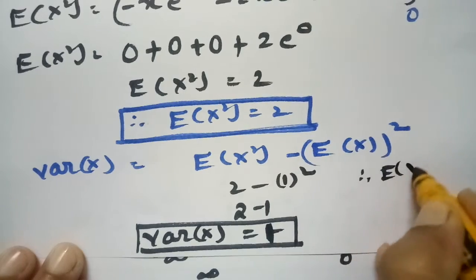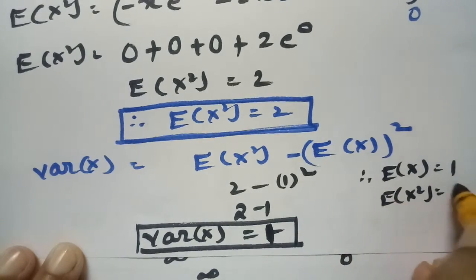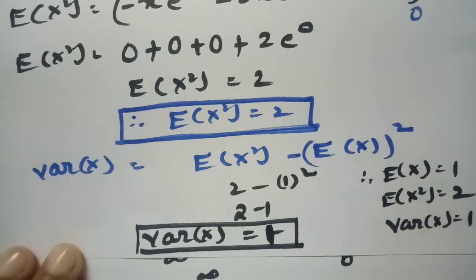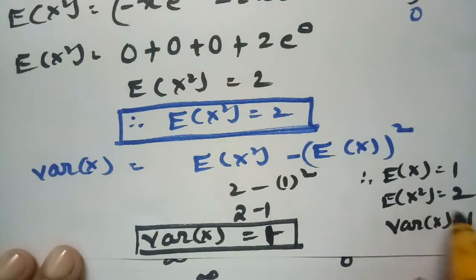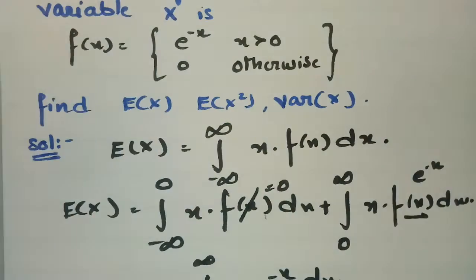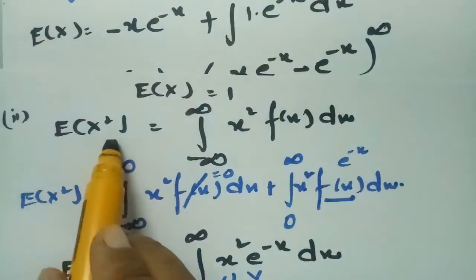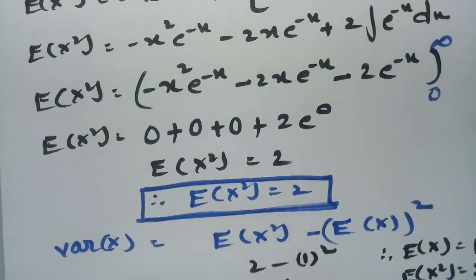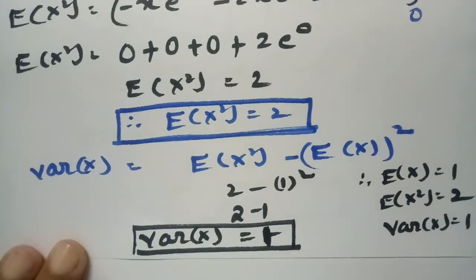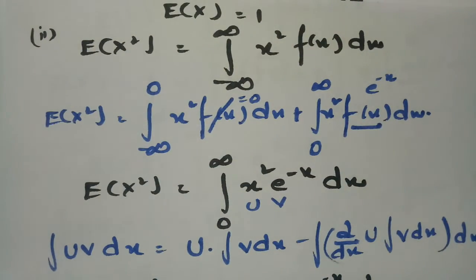To summarize: E(X) = 1, E(X²) = 2, and Variance of X = 1. These are the three values found for this exponential distribution problem.